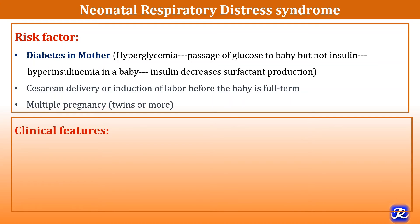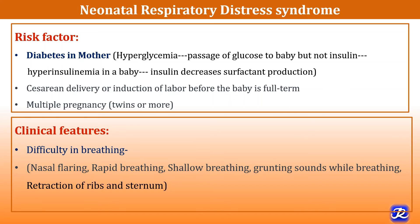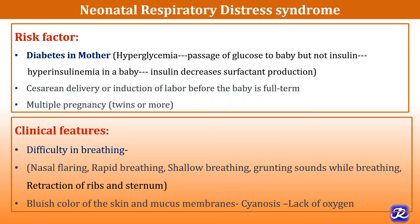The clinical features of RDS are difficulty in breathing. The baby presents with nasal flaring, rapid shallow breathing, grunting sounds while breathing, and retraction of ribs and sternum — all features indicating respiratory distress. Bluish color of the skin and mucous membrane indicates cyanosis due to lack of oxygen.